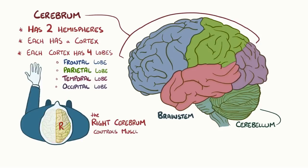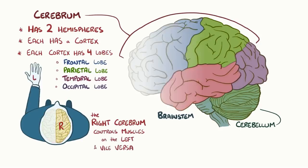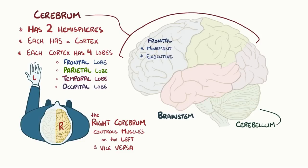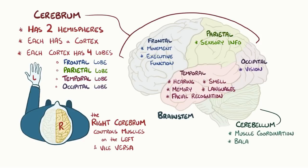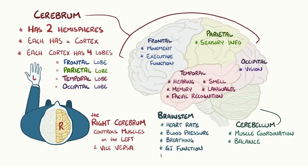The right cerebrum controls muscles on the left side of your body and vice versa. The frontal lobe controls movement and executive function, which is our ability to make decisions. The parietal lobe processes sensory information, which lets us locate exactly where we are physically and guides movement in three-dimensional space. The temporal lobe plays a role in hearing, smell, memory, as well as visual recognition of faces and language. The occipital lobe is primarily responsible for vision. The cerebellum helps with muscle coordination and balance. And the brain stem plays a vital role in functions like heart rate, blood pressure, breathing, gastrointestinal function, and consciousness.